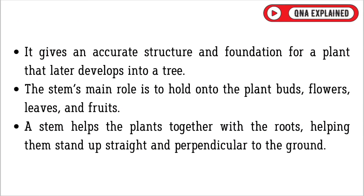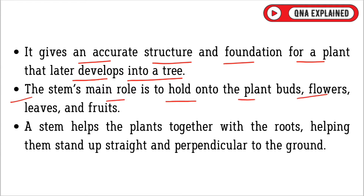It gives an accurate structure and foundation for a plant that later develops into a tree. The stem's main role is to hold on to the plant buds, flowers, leaves and fruits. A stem helps the plant together with the roots, helping them stand up straight and perpendicular to the ground.